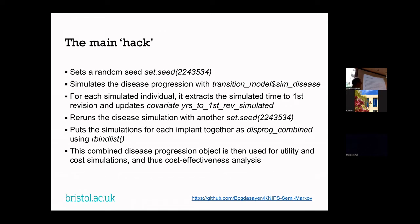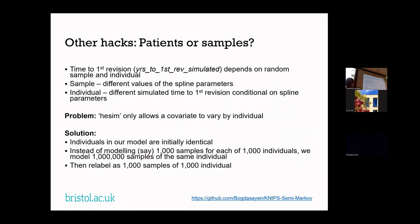I'm not sure if it was any faster than writing in base R from the beginning. Another issue: time to first revision is a covariate that depends on the random sample, since splines are probabilistic and sampled from a joint distribution of coefficients. But in hesim, covariates only differ by individuals, not by samples. The messy solution was to model a million samples of the same individual instead of a thousand samples of a thousand patients, then relabel them at the end as a thousand samples of each individual.